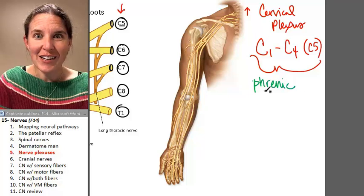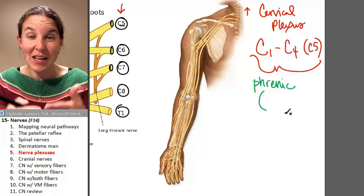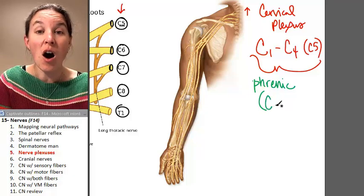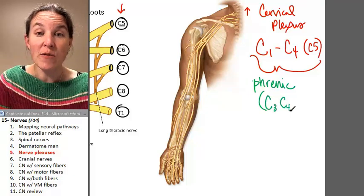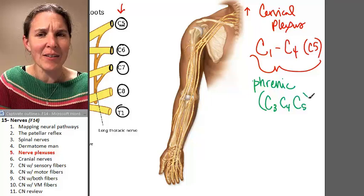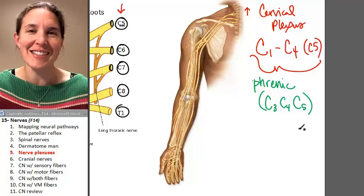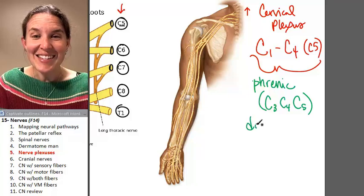And the phrenic nerve fibers that contribute, or spinal nerves that are contributing fibers to the phrenic nerve are C3, C4, and C5. And what do you think the phrenic nerve innervates? The diaphragm.